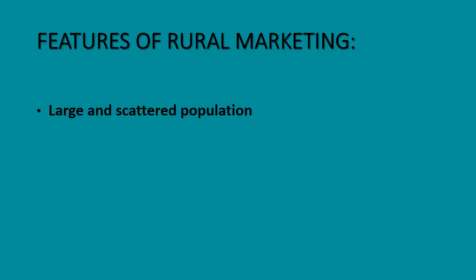Features of rural marketing. To understand more in depth about the rural market, we need to understand the features of it. The first is large and scattered population. Rural population is about 70% of the total population of India and is scattered or divided across over 6 lakh villages. To reach such villages is a very big task for any new rural entrepreneur or existing large companies.